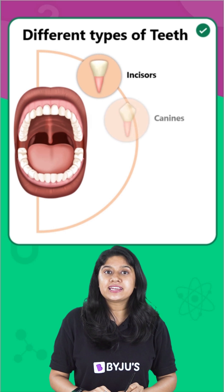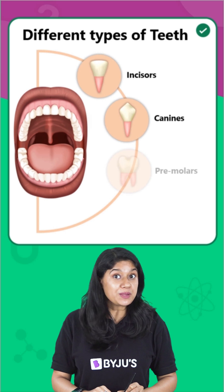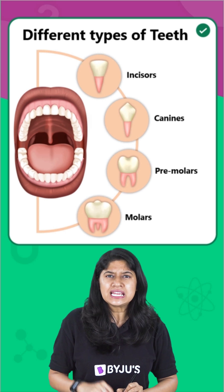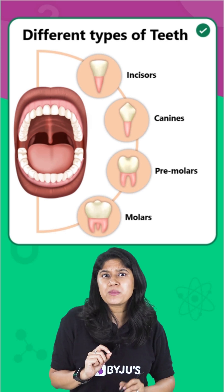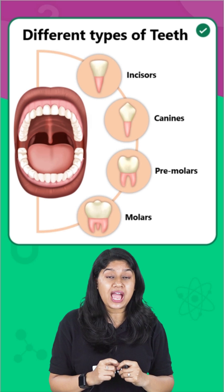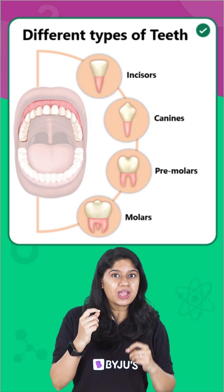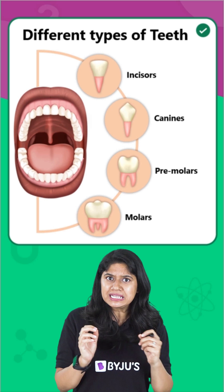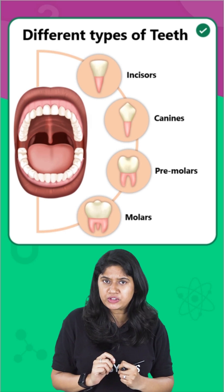We have incisors, canines, premolars, and molars. The dental formula represents the number of teeth we have in the upper and in the lower row. Now let's quickly count the number of teeth we have.